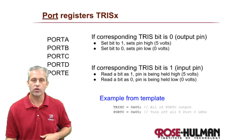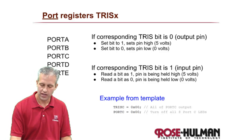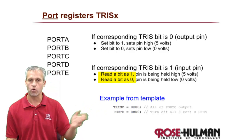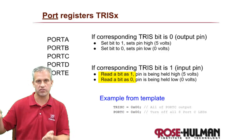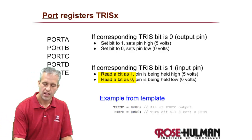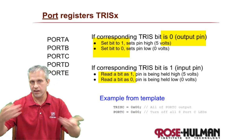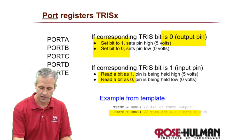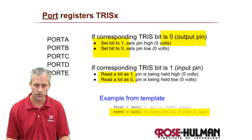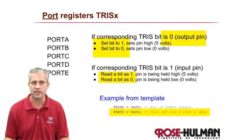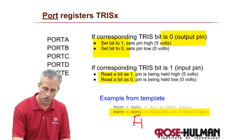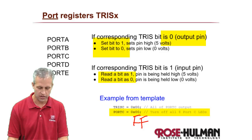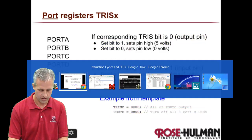In addition to the TRIS register, you also have the PORT register. If a pin is an input, you read that bit in the PORT register — it will tell you if a switch is high or low. If it's an output, you set it: write a 1 to set it high, write a 0 to set it low. For example, to turn off all LEDs you'd write 0x00; to turn them all on, write 0xFF.